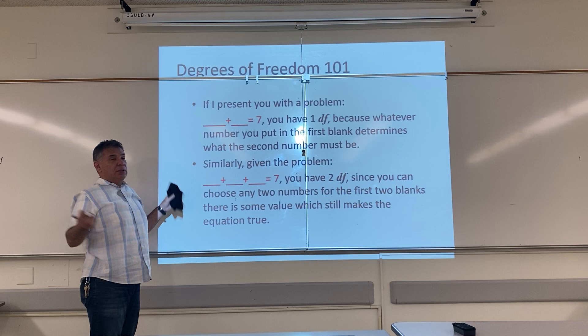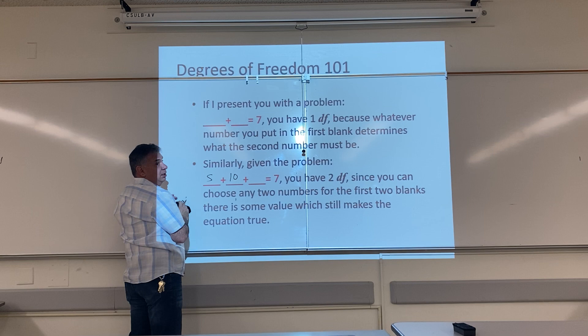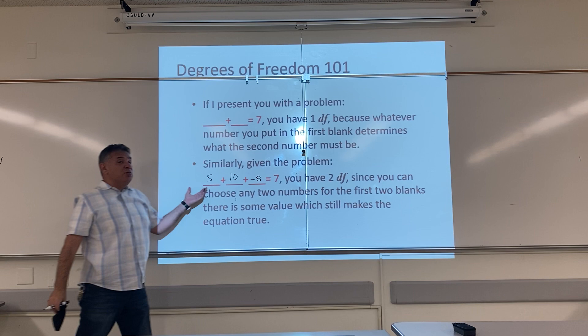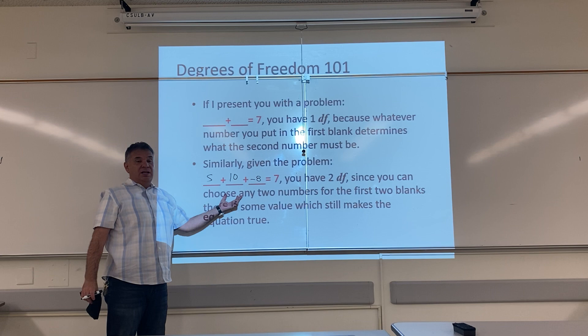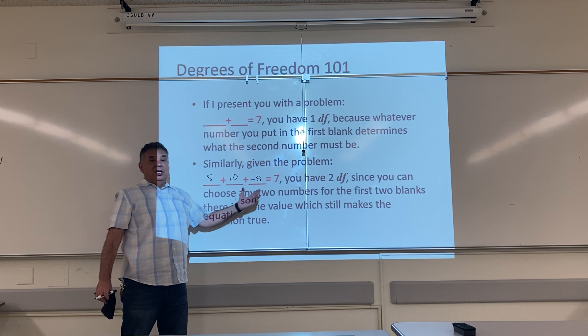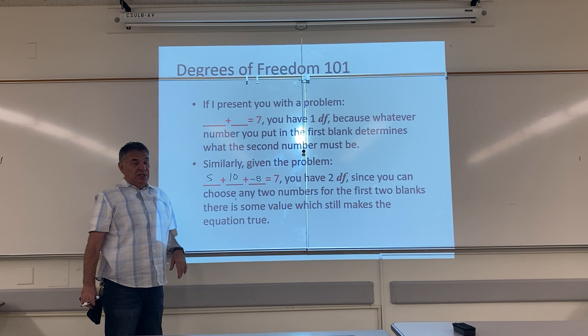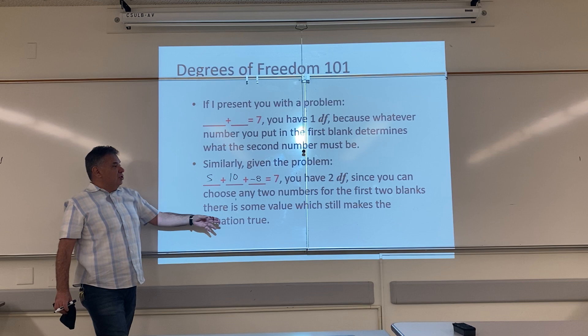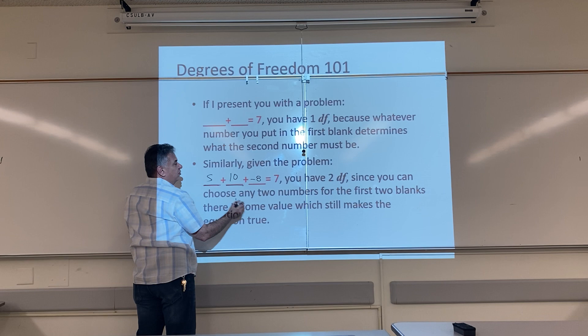Let's look at this next problem. Pick any number in the world — 5. Pick any number in the world — 10. Now I have 15. Can I pick any number in the world for the third blank? No. This number can only be negative 8. So this was free to be whatever it wanted to be, and this was free — but the minute I used up all my freedom, this is restricted. So how much freedom did I have? I had two degrees of freedom, since I can choose any two numbers for the first two blanks, and there is one value which still makes the equation true, which becomes restricted.